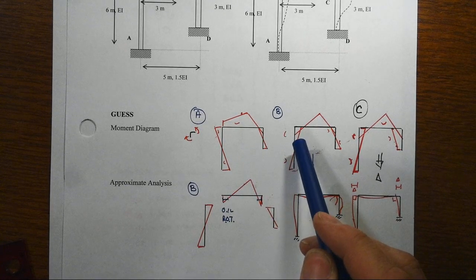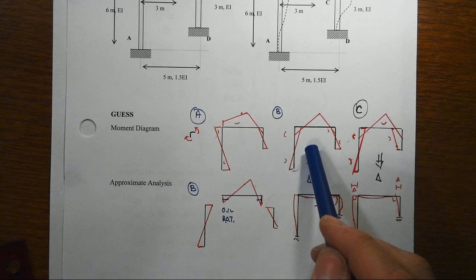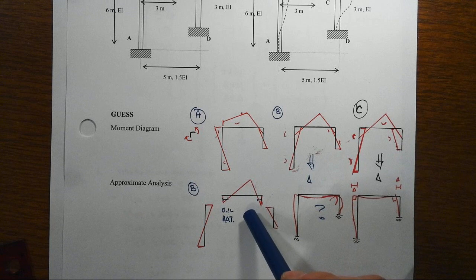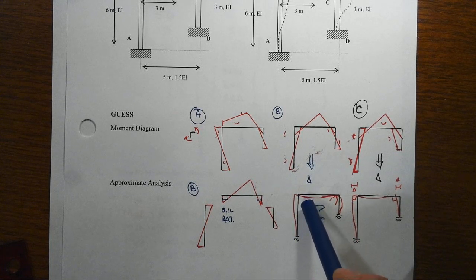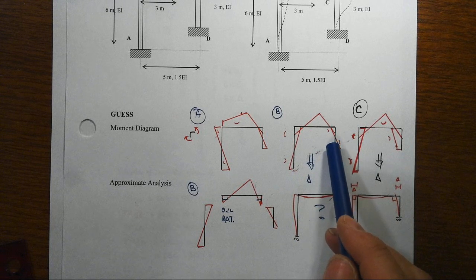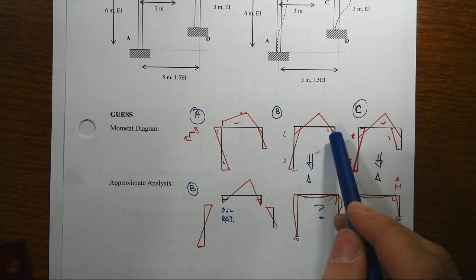And so then we thought, well, maybe it would look something more like what you see here. And that had a conflict too in the way that the moment diagrams would work, and that conflict was that this right-hand column was not going to be a reverse curvature.